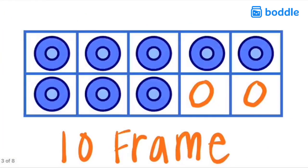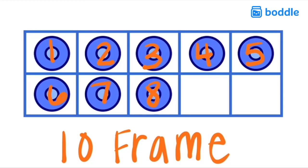But when we go over to our 10 frame, if it's not full, we can use this 10 frame to help us count. So I have how many on the top row? 1, 2, 3, 4, 5. Jump down to the bottom row. 6, 7, 8. And that is how we can practice counting to 10.